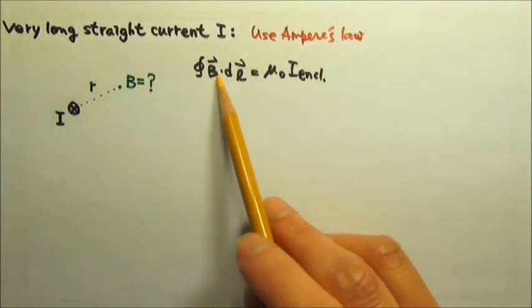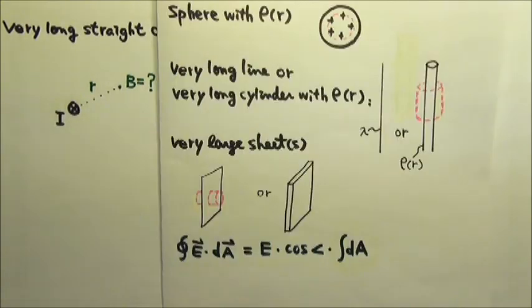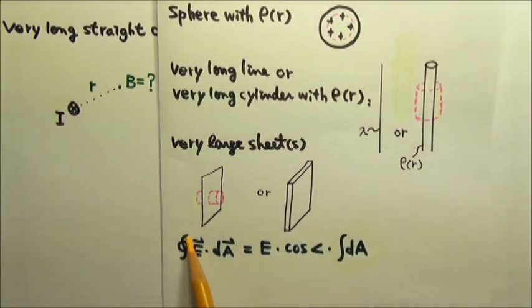When we use Ampere's law to find the magnetic field, the process is very similar to what we do when we use Gauss's law to find the electric field.